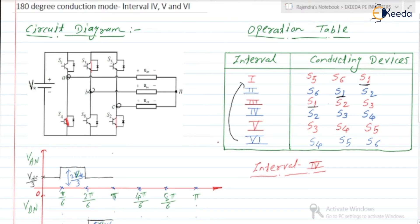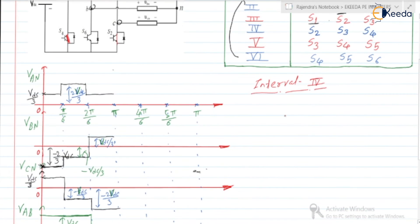Now, can we draw the equivalent circuit? Here, phase A is connected to the negative plate of the VDC, phase B to the positive, and phase C to the negative. So we can draw the circuit like this, with VDC plus and minus. Phase A and phase C are connected to the negative plate, and phase B is connected to the positive plate.